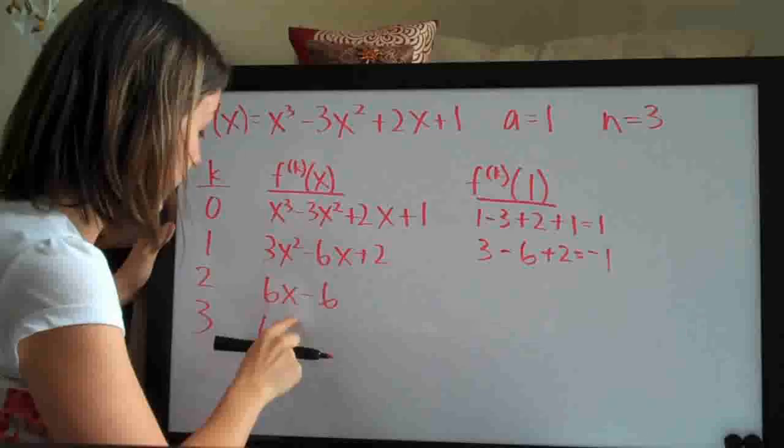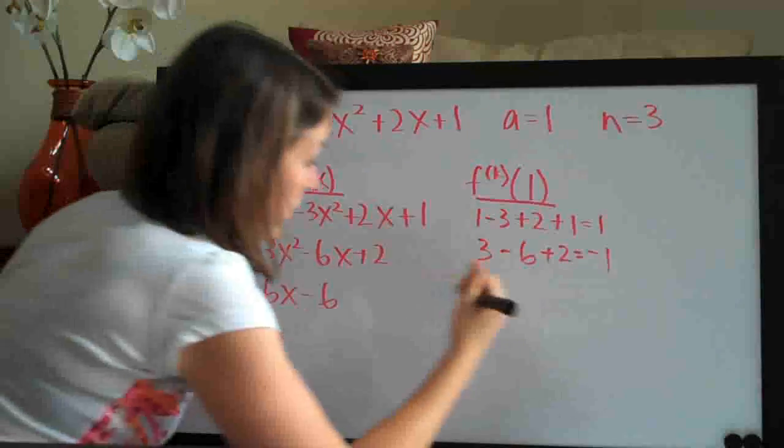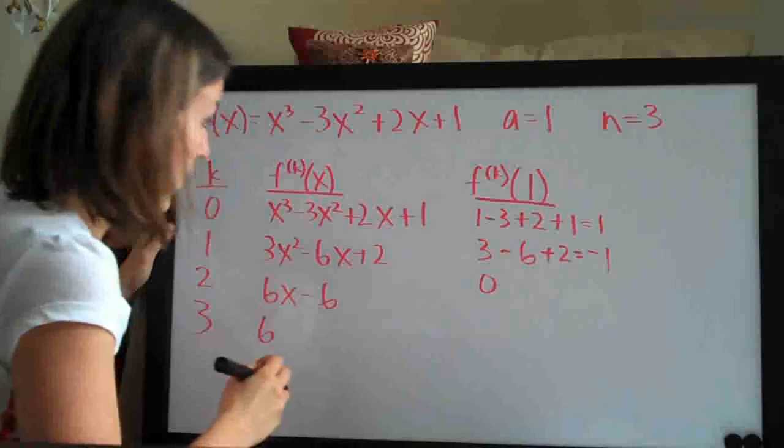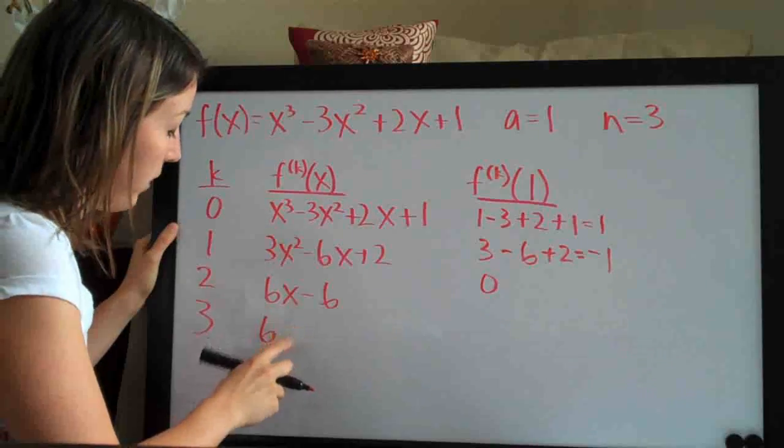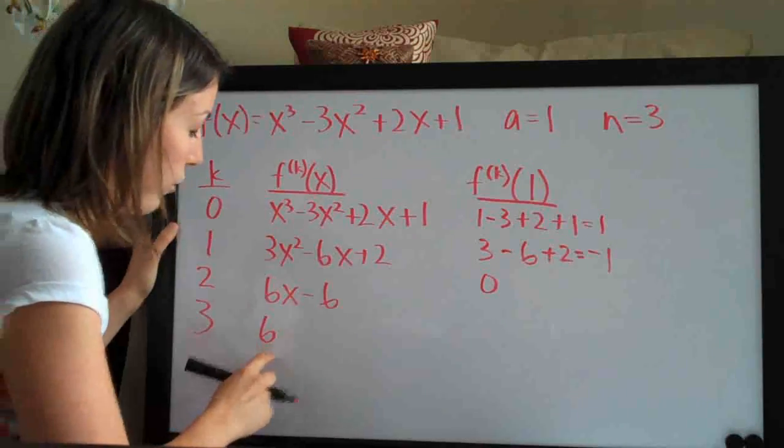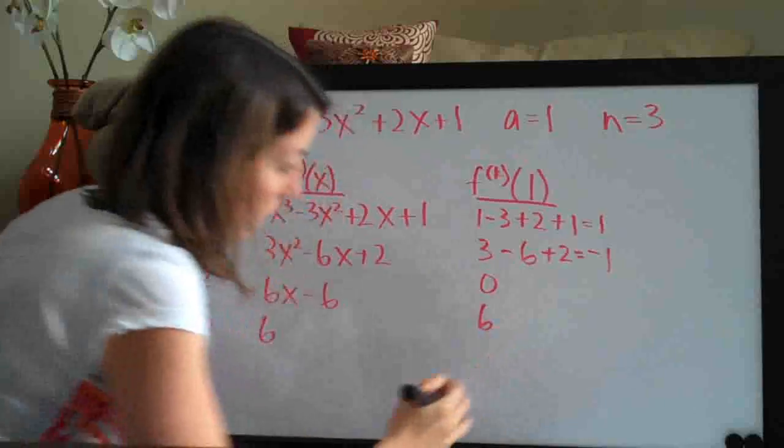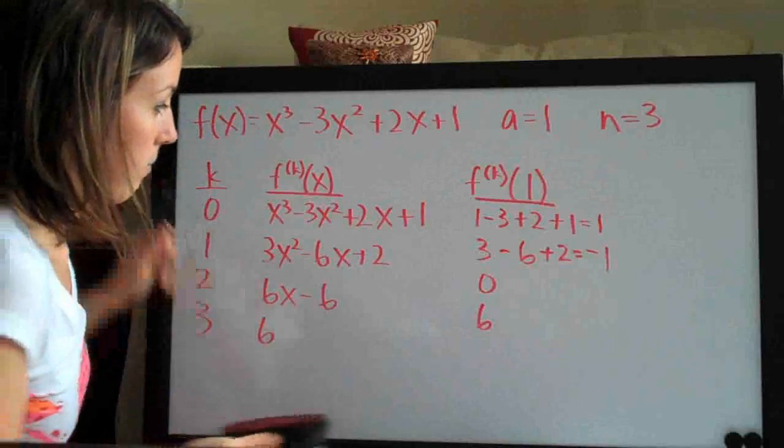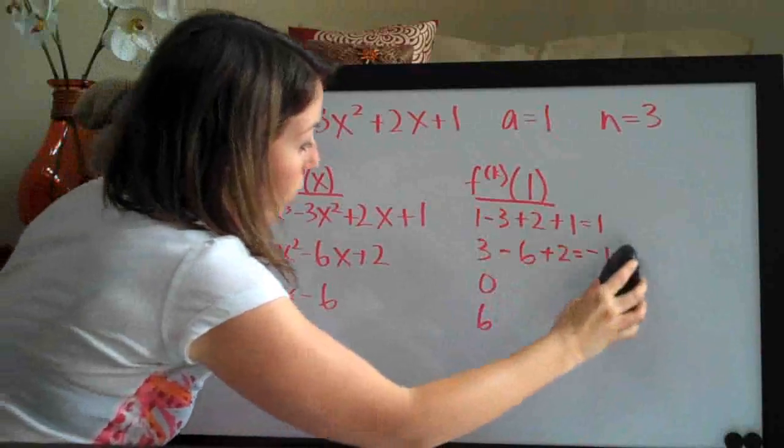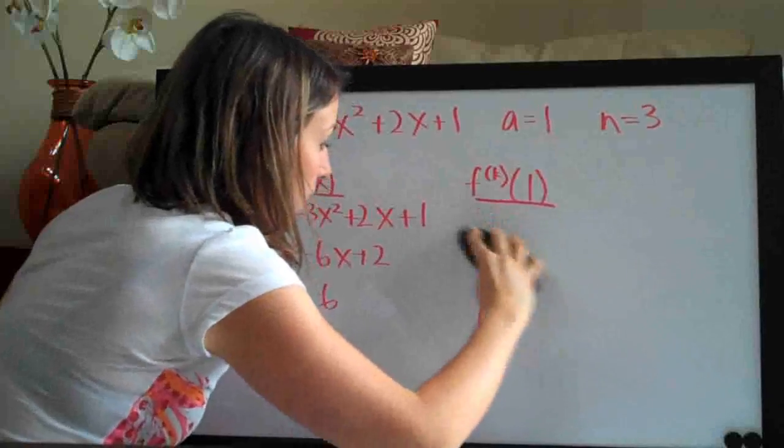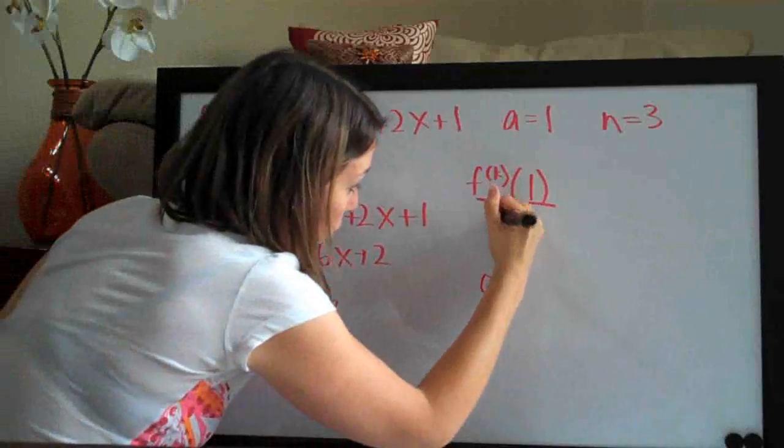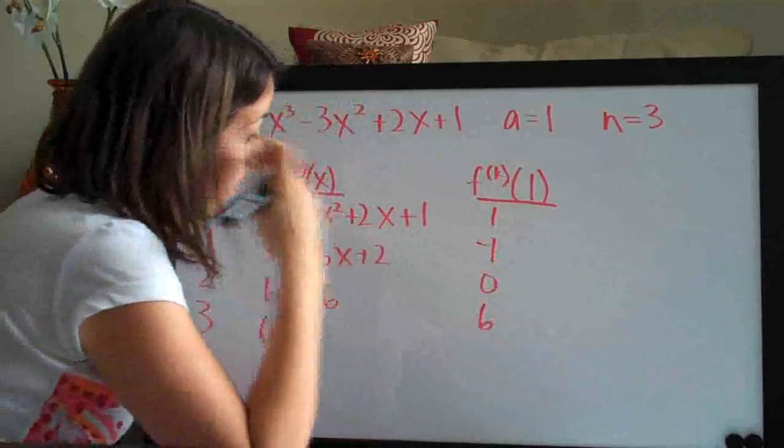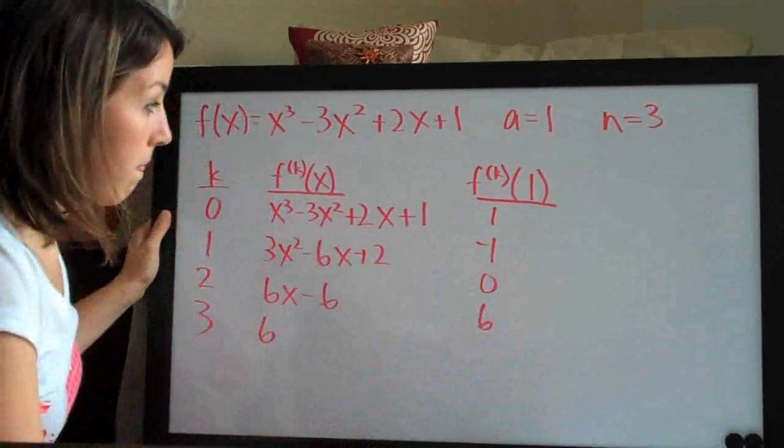Then we do the same thing, plug 1 in down here, we get 6 minus 6 which is 0. And then we would plug in 1 here but there's no variable to plug in, so this is just 6. So let's go ahead and erase this so we can make this column thinner. We have 1 and negative 1 for the first two rows here, 1 and negative 1.